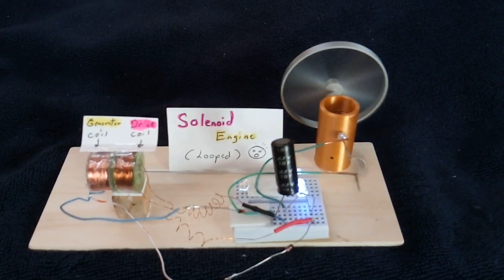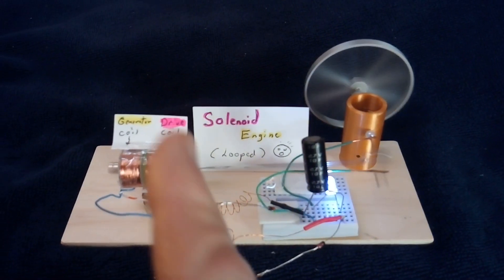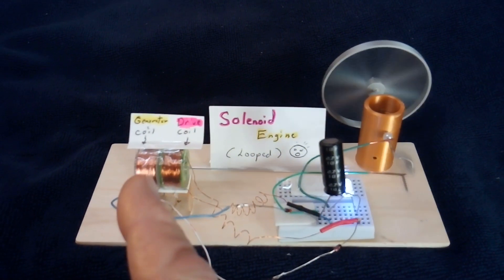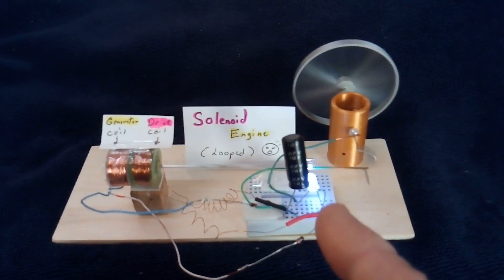Okay, well here's the solenoid engine loop where I've taken the output of the generator coil and put it into the front end of the engine.